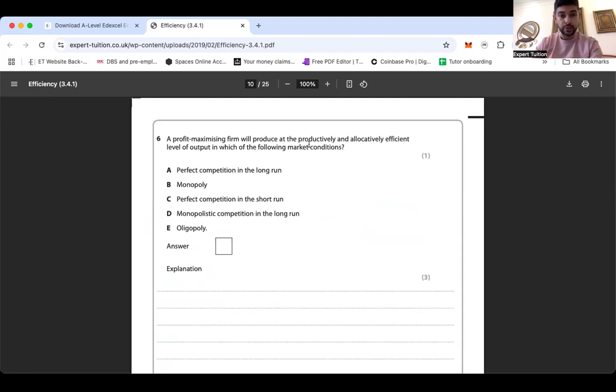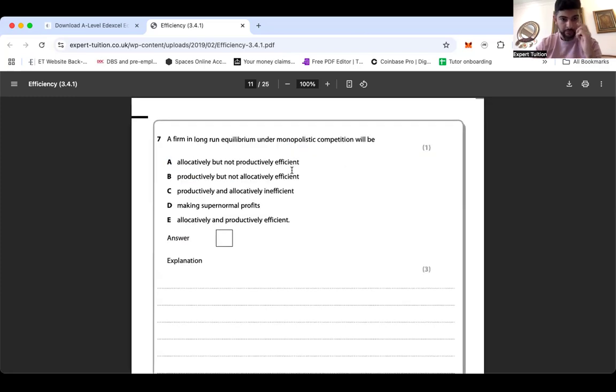So straight away, you need to recognize that. Right. A profit maximizing firm will produce a productively and allocatively efficient level of output in which of the following market conditions. We just worked it out. It only ever happens in one scenario, perfect competition in the long run, and so on and so forth. Here you go. Another one. A firm in long run equilibrium under monopolistic competition will be - never, never productively, never allocatively. It's neither. So it's inefficient this time. So C. Productively and allocatively inefficient. Okay. Just accept it, know it, be able to use it.